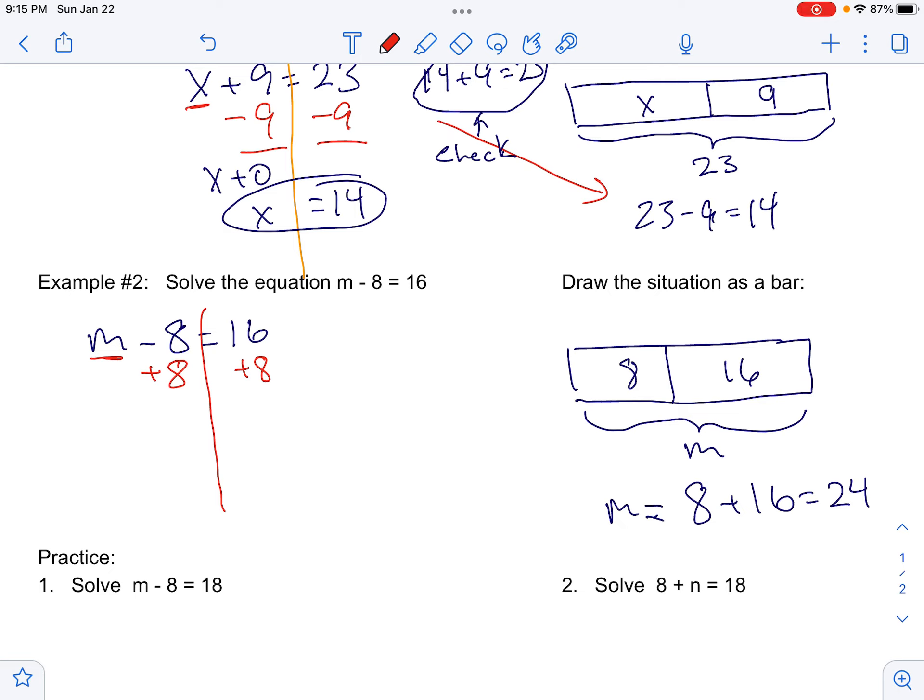One thing you can think about is always just take whatever's doing to the variable and do the opposite. So the opposite of minus 8 is plus 8. I end up with m plus 0, which is just m. That's going to equal, and again, 16 plus 8 is 24.